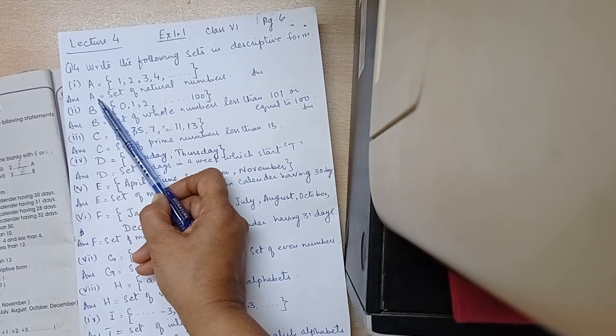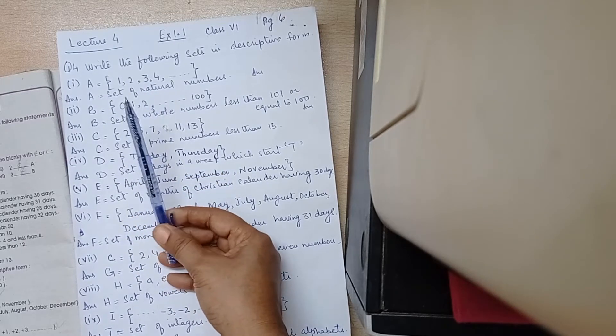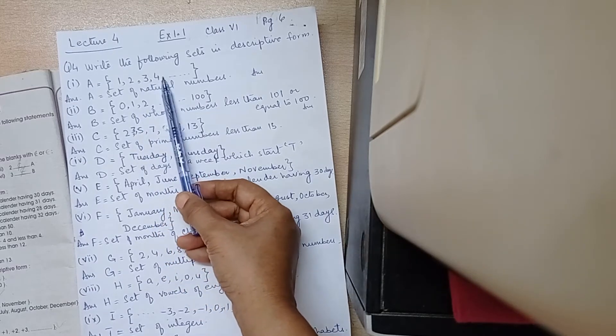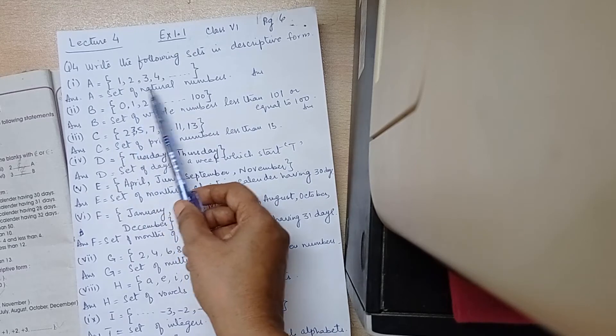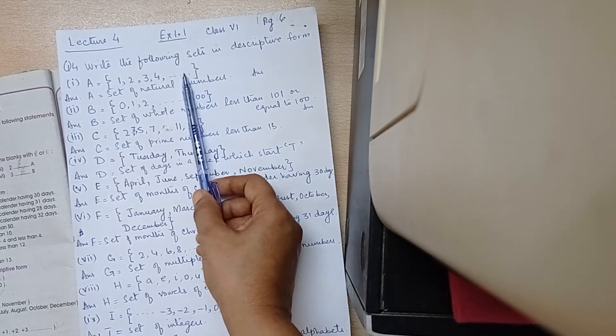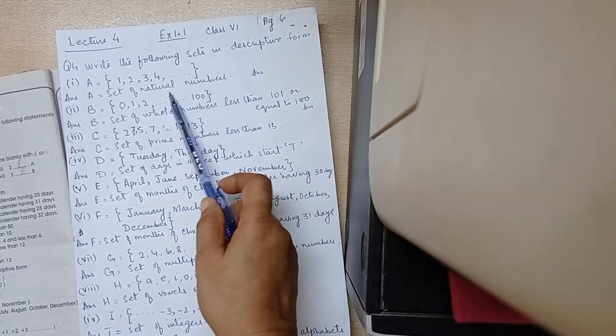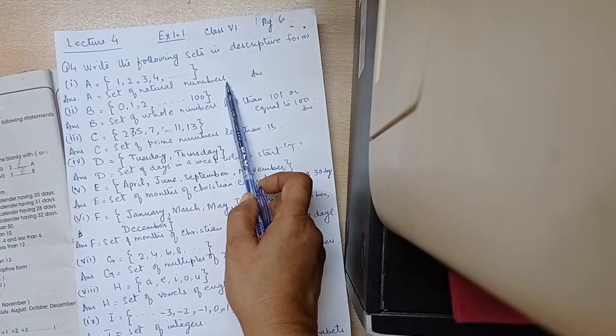We will write in descriptive form. The numbers which start from 1 are called natural numbers. A is equal to set of natural numbers. Limits are not given. It means that you will write such a set of natural numbers. This limit is not given.